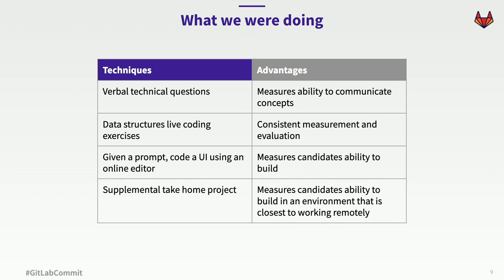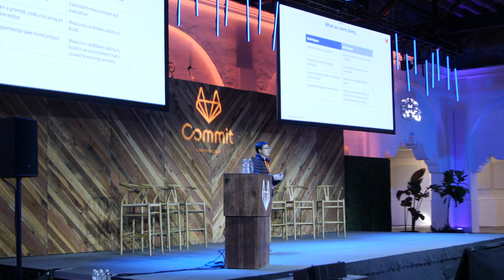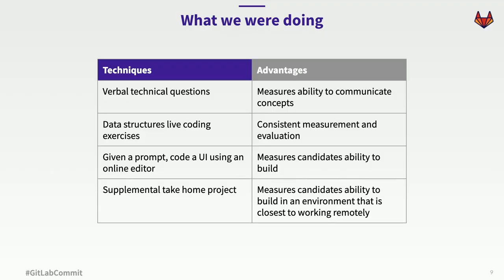So what are the advantages of these different techniques? With verbal technical questions, you're able to understand how they communicate — if they can communicate technical concepts, that's usually a good sign. With data structures, it's a consistent measurement and evaluation; I can communicate to another manager that this person wasn't able to do a linked list or understand runtime efficiency. With the prompt, you're able to accurately measure candidates' ability to build something and see the progression. And with a take-home project, you're able to build an environment that mimics working remotely more accurately.